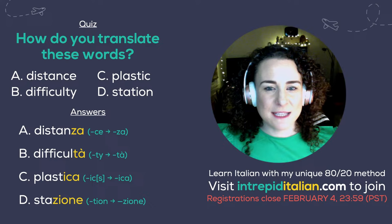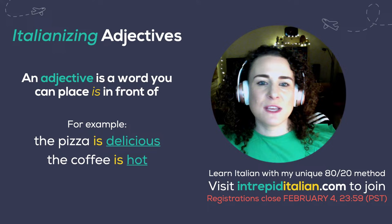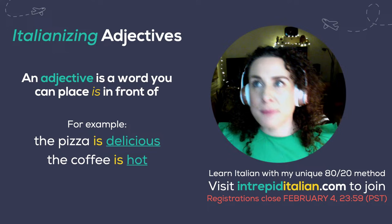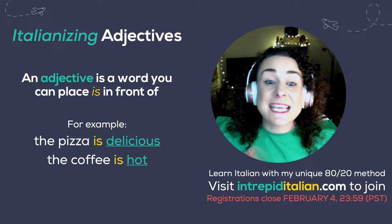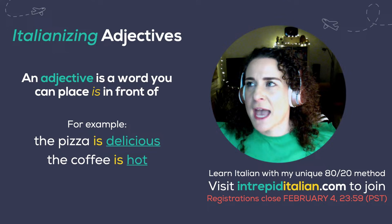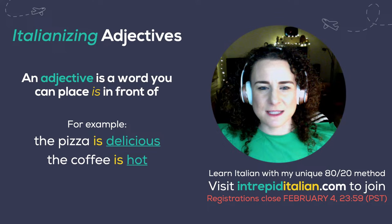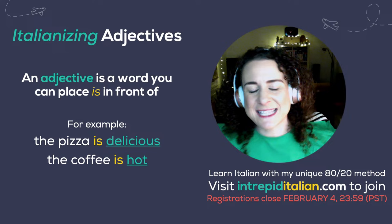Next we are going to look at Italianising adjectives. For those of you not familiar, an adjective is a word you can place 'is' in front of. Is big, is small, is nice, is kind — 'the pizza is delicious,' 'the coffee is hot.' So anything we can place 'is' in front of is an adjective — we're describing something. A noun is the name of something, a verb is a doing word, and an adjective is a describing word. An adjective is a word you can place 'is' in front of: is big, is small, is this, is that.